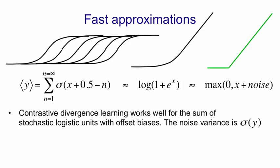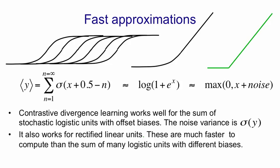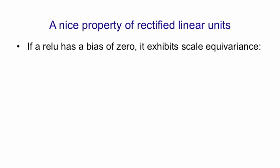Contrastive divergence learning works well for the sum of a bunch of stochastic logistic units with offset biases. And in that case, you get a noise variance that's equal to the logistic function of the output of that sum. Alternatively, we can use that green curve and use rectified linear units. They're much faster to compute because we don't need to go through the logistic many times. And contrastive divergence works just fine with those.